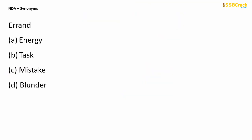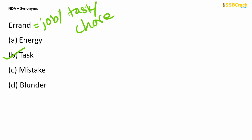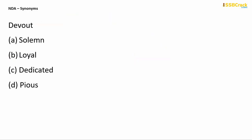The next word is errant. To do something on errant, or errant, means to do a job, a task, or any kind of chore. The answer is in option B — 'task' is the synonym of errant, so your answer is option B. The next word is devout. If one is a devout Hindu or a devout Christian, that person is deeply into their religion.